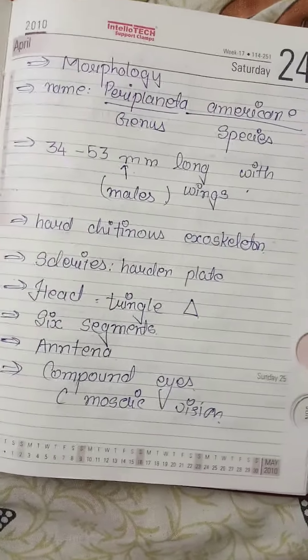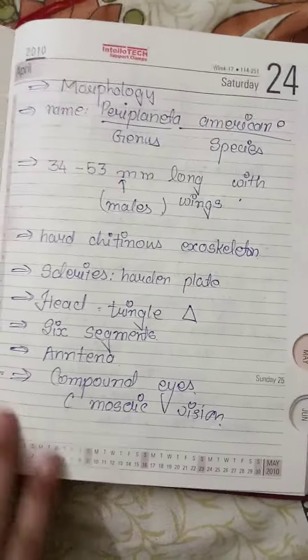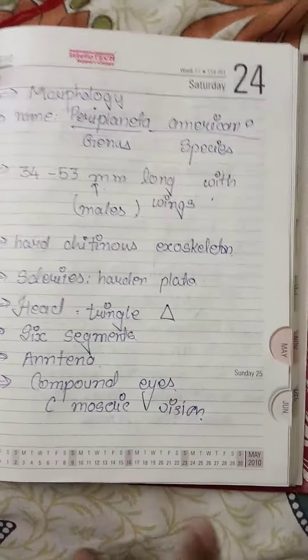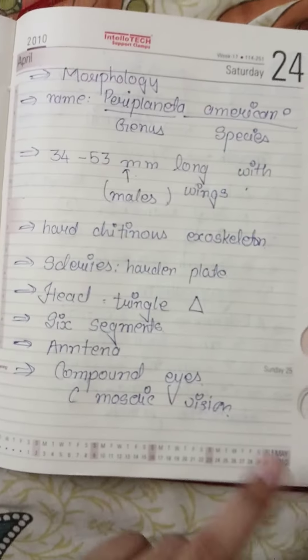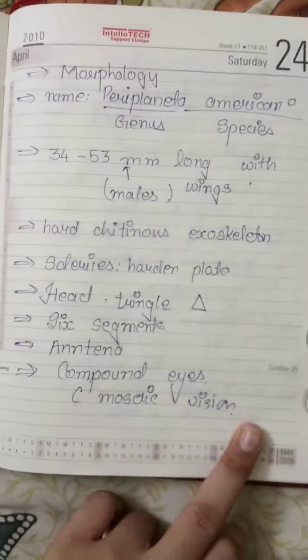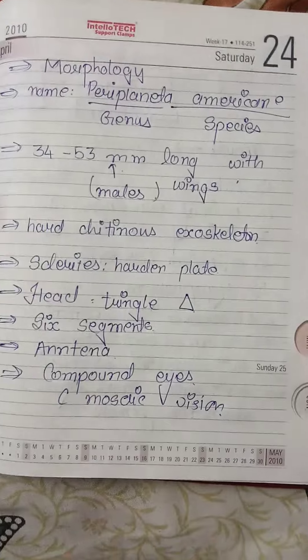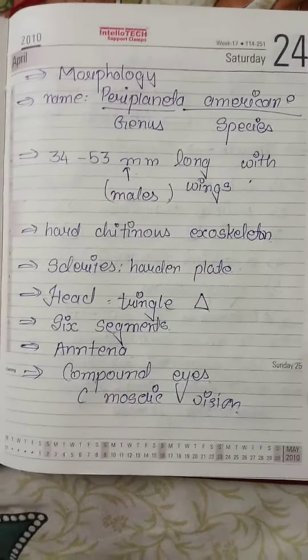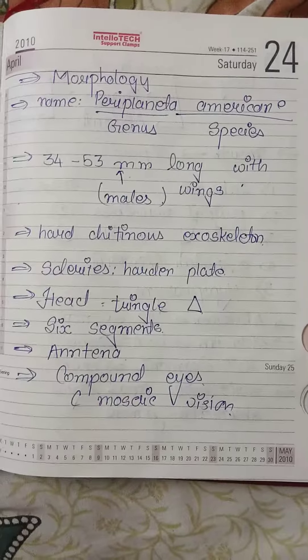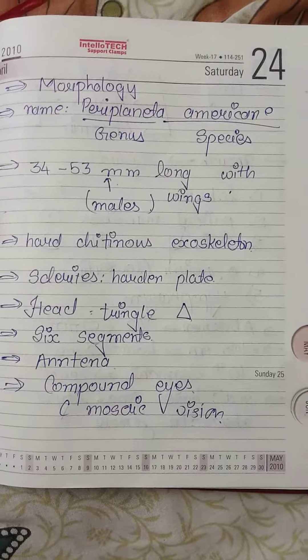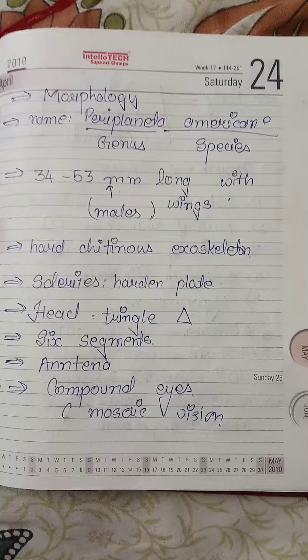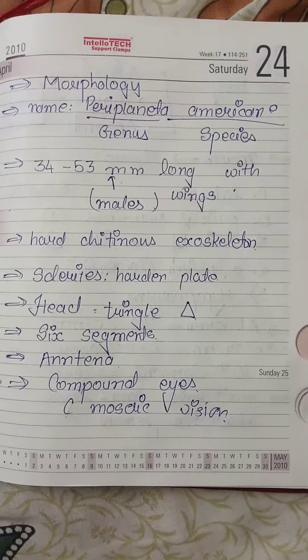Morphology consists of various features of cockroach. So let's start with the scientific biological name, that is Periplaneta americana, in which Periplaneta is the genus and americana is the species.